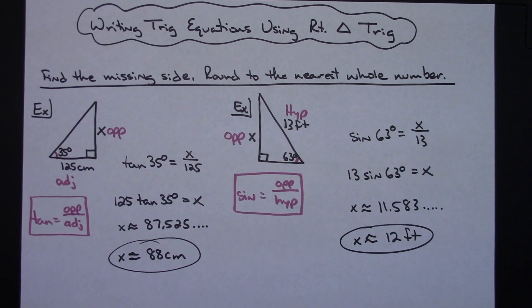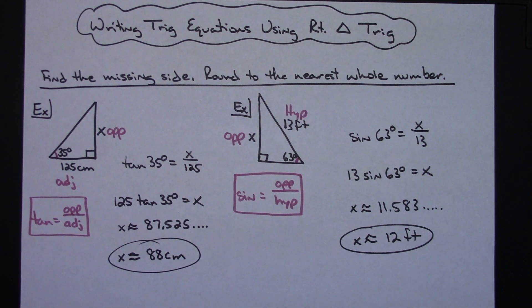So just a couple of examples where you're finding that missing side of the triangle using trig equations, specifically right triangle trig since you're given right triangles in both of these. Thanks for watching! Don't forget to subscribe to the channel and share with your friends.